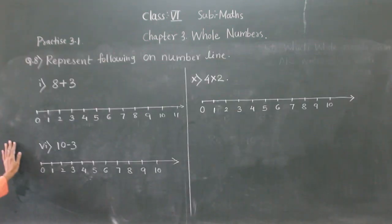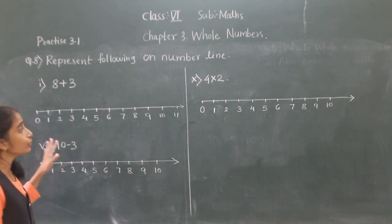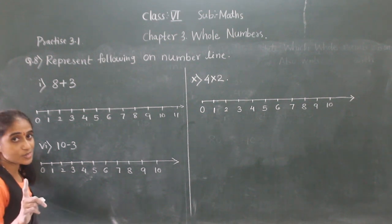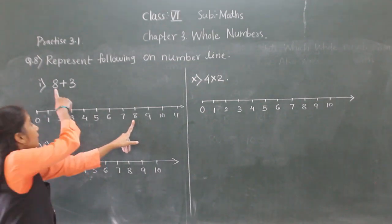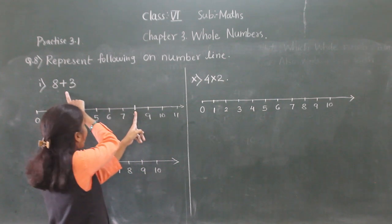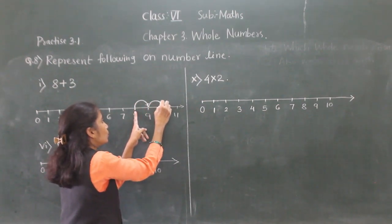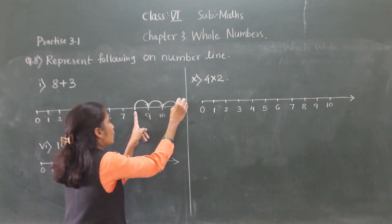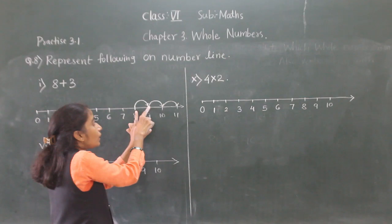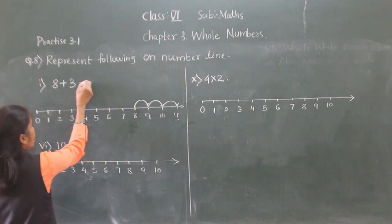Let's move to question 8: represent the following on the number line. Example: 8 plus 3. Start from 8 and move towards the right, making 3 jumps: 1, 2, 3. We reach 11. So 8 + 3 = 11.